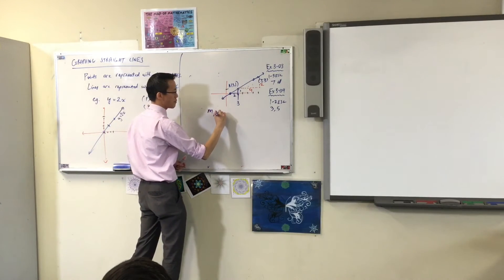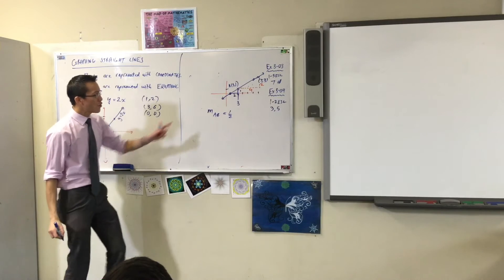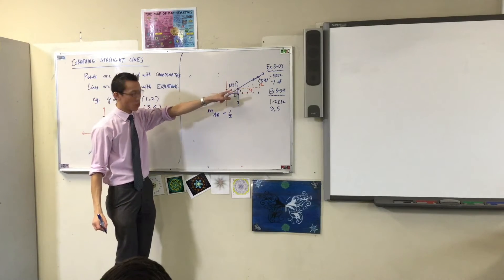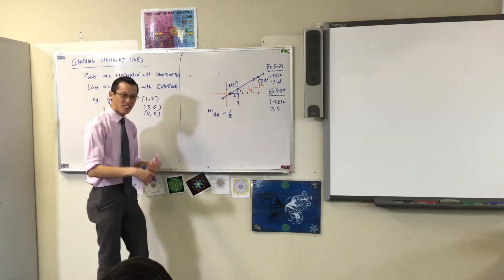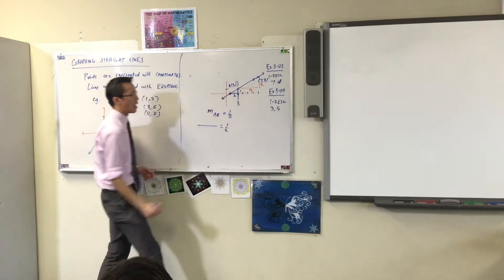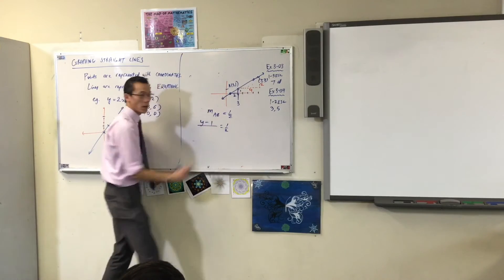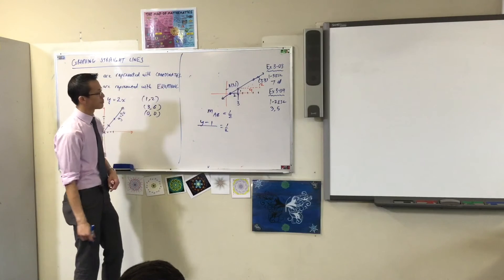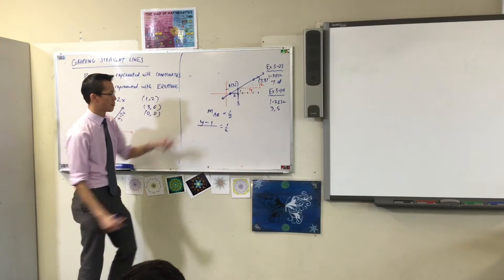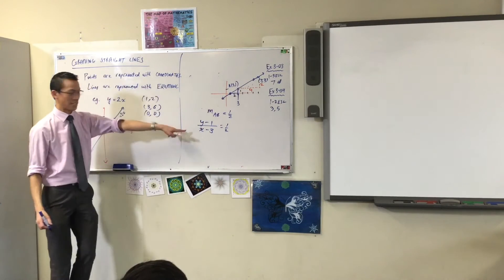So, the gradient AB is a half. Right? But you know what A is. It's 3, 1. Right? So, I can write rise over run like this. It's a half. The rise is some Y value take away 1. Rise there over some X value take away 3. That's the run.